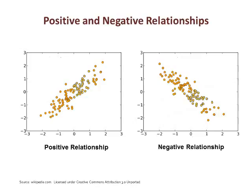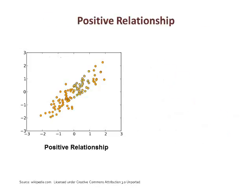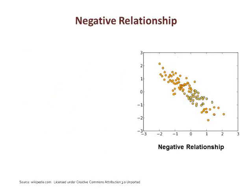Direction has to do with how the variables move together. We speak of direction as positive or negative. A relationship is said to be positive when the independent and dependent variables increase together. Here we see that as the x value increases, the y value also increases. By contrast, a relationship is said to be negative when the independent and dependent variables move in opposite directions. Here we see the x value increasing as the y value decreases. This relationship is also sometimes called an inverse relationship.